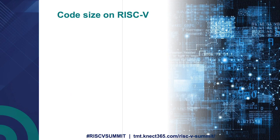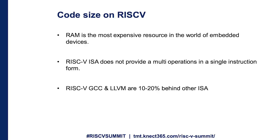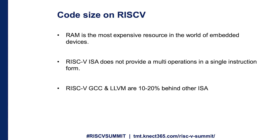When it comes to code size and small footprint products or MCUs, RAM is the most expensive resource and we always struggle to not consume it, not consume the text area, and keep the code smaller. We took a glance at RISC-V and saw one obvious thing: it doesn't provide multiple operation instructions — one instruction that can perform multiple operations on the core. Besides that, RISC-V on GCC and LLVM compilers was behind 10 to 20% of other ISAs.